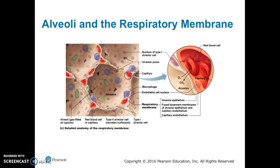Type 2 alveolar cells are also found scattered around the alveoli, and they secrete surfactant. The close-up figure illustrates the movement of oxygen out of the alveolus across a type 1 cell into the capillary, where it is picked up by hemoglobin, and also the movement of carbon dioxide out of the capillary across the single layer type 1 alveolar cell into the alveolus.